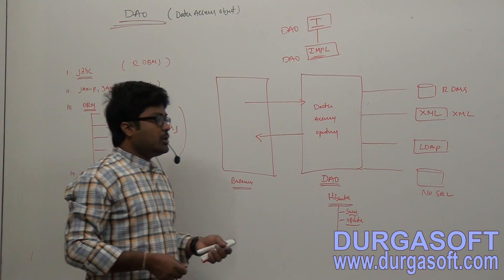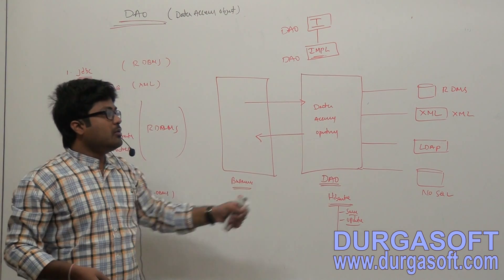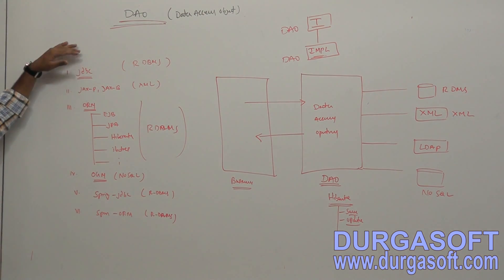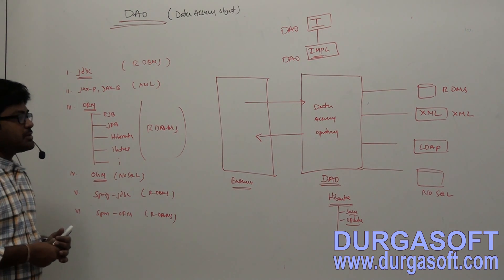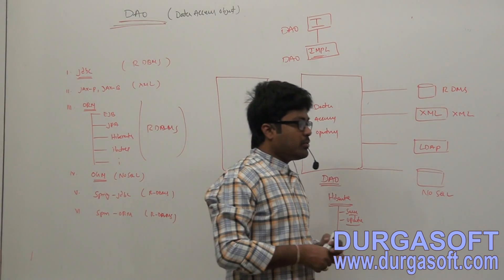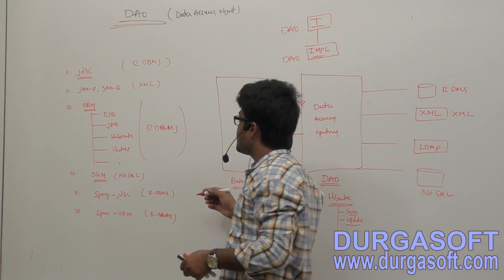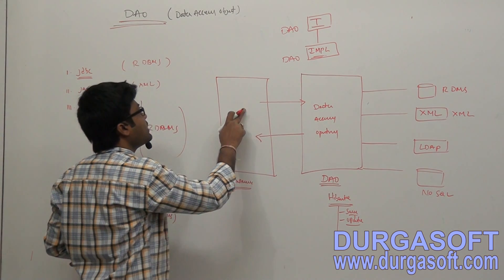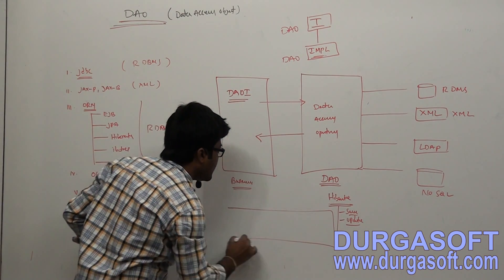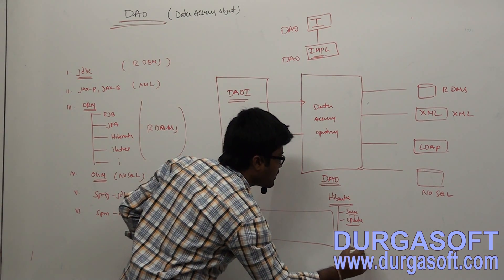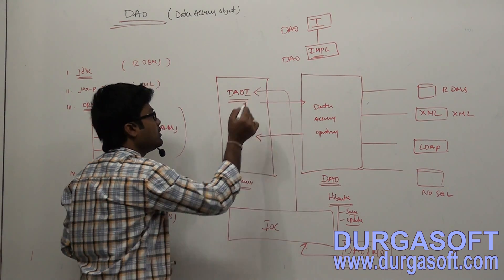To implement a DAO, you must first design a DAO interface, then provide implementations using simple JDBC, ORM tools, Spring JDBC, or Spring ORM. In Spring we have dependency injection, and by using dependency injection you can make your business and DAO layers loosely coupled. If you take a DAO interface reference, by using Spring IOC you can create any DAO implementation object and inject it into the interface reference.